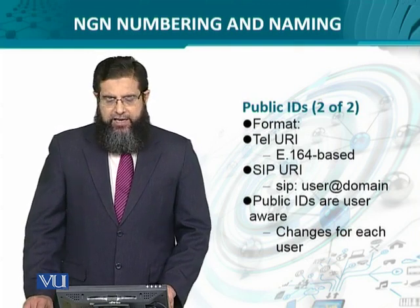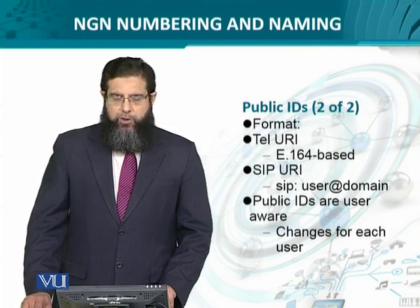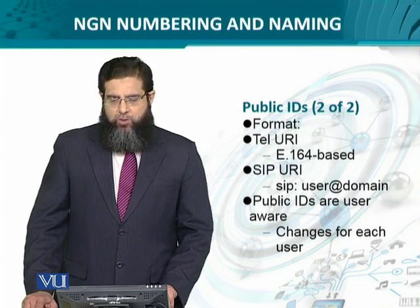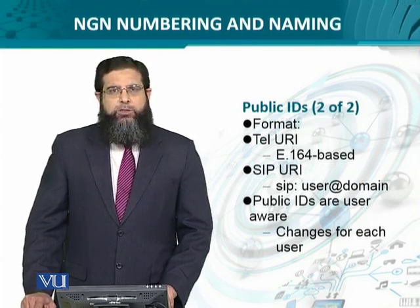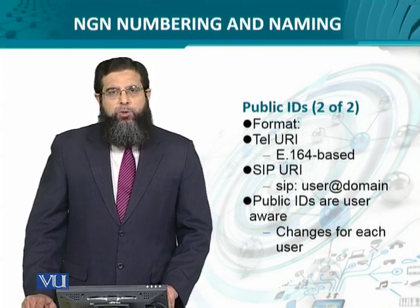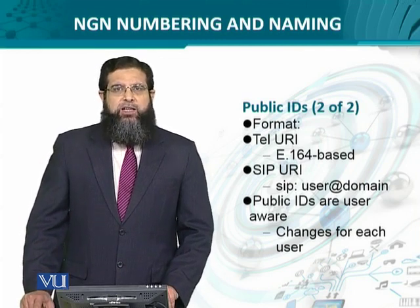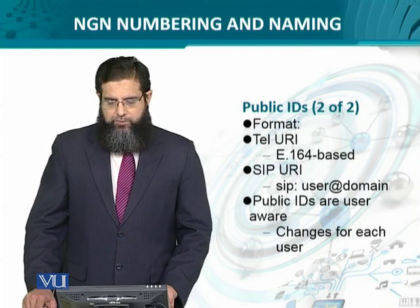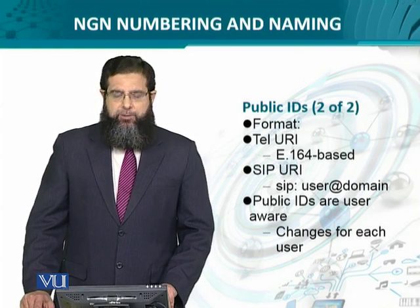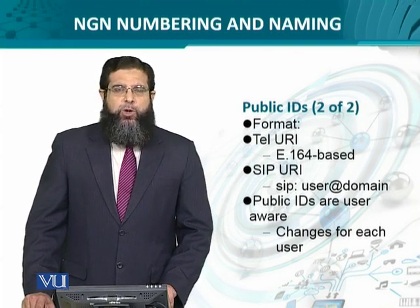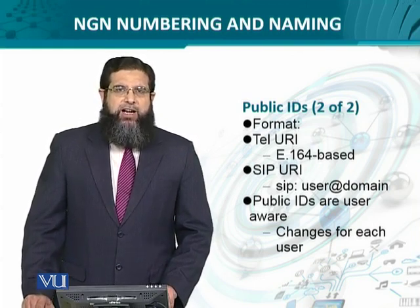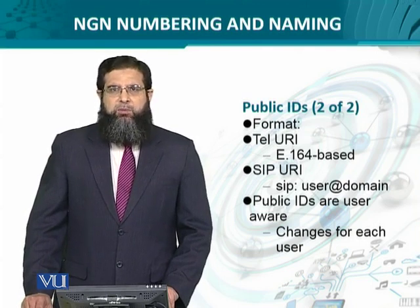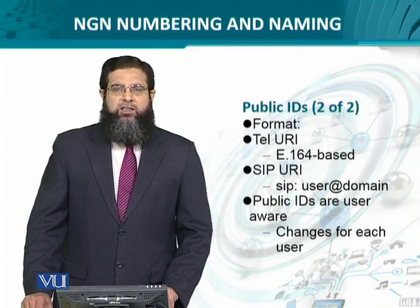The format of the public ID can be either in the form of the telephone user uniform resource identifier, for instance E.164 based, which is the E.164.ARPA mechanism provided by ENUM. And then we have the SIP URI, which is used especially in voice over IP dialing and signaling. The format is a user at the rate the administrative domain it belongs to. The public IDs are user aware, meaning against every user the public ID is going to change. To best understand public and private IDs, you can establish a relationship between the domain name and the IP address, but here in NGN the properly designated terminologies are the public and private IDs.